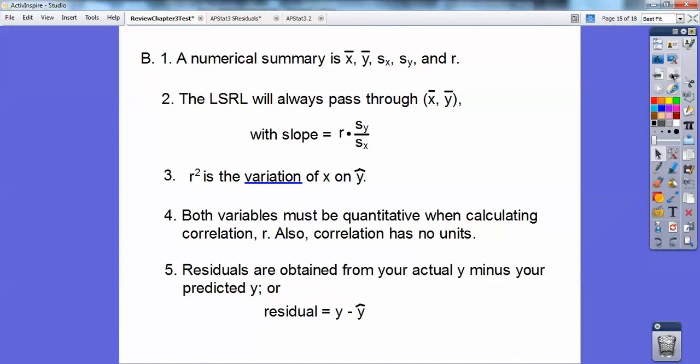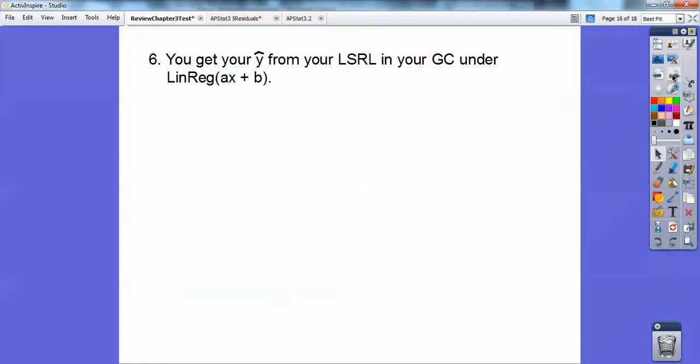Residuals are obtained from your actual y minus your predicted y. And you get your predicted y from your least square regression line that you plug in your calculator. You get your actual y from the data from the table that they gave you. So whatever your y is, you subtract off your predicted y, and that would be called your residual. And then you can graph those residual plots. Look on lesson 3.5 on residuals, on how to plot residuals if you struggle on that.